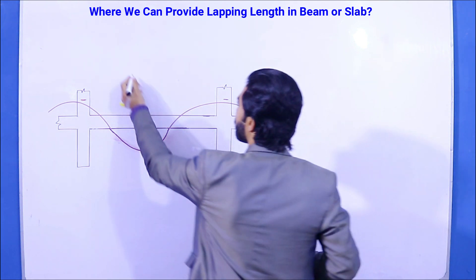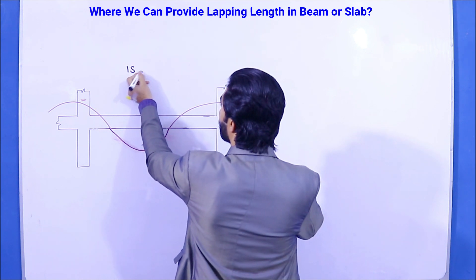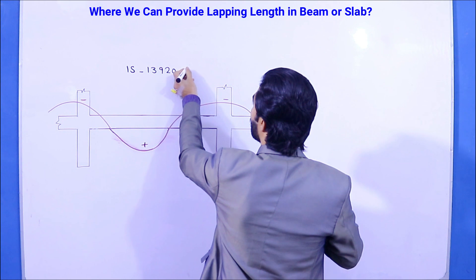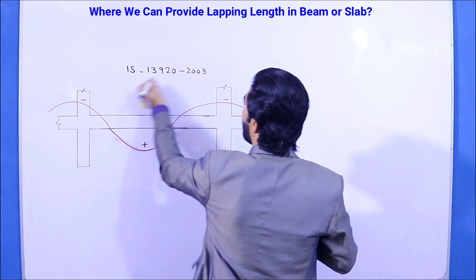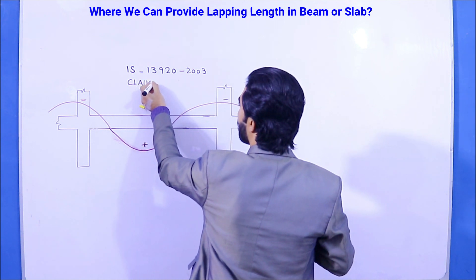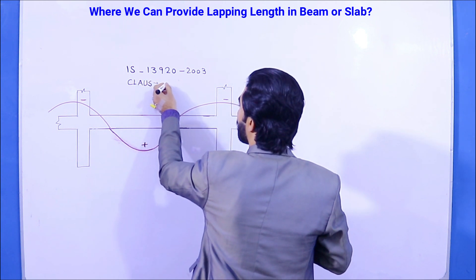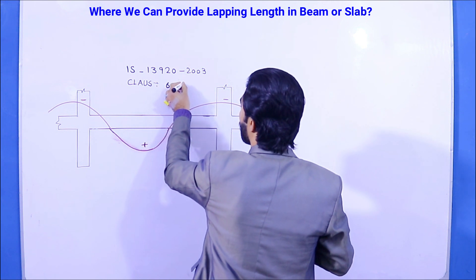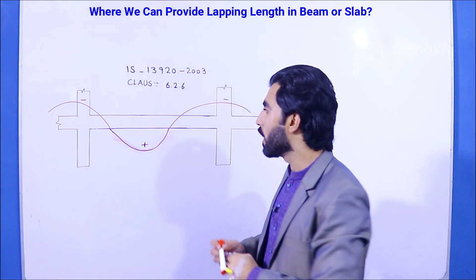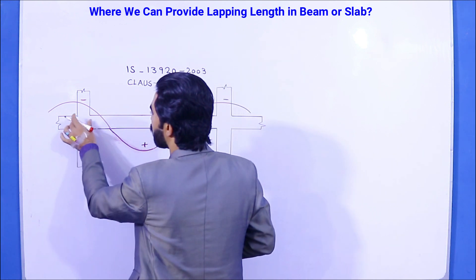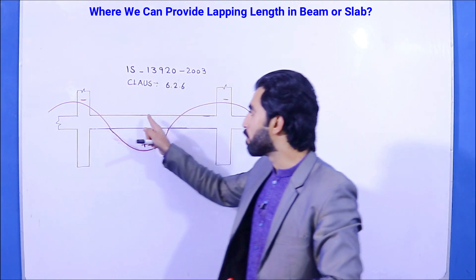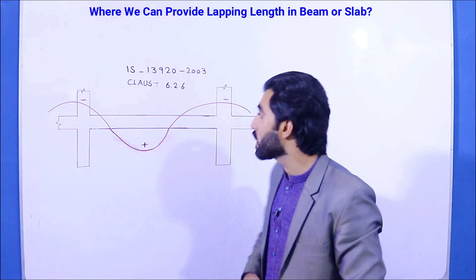According to IS 13920:2003, clause 6.2.6, the lapping length should not be provided at the joint. The joint means where the column meets the beam. Lapping length should not be provided at the joint, whether it is in the compression zone or the tension zone.